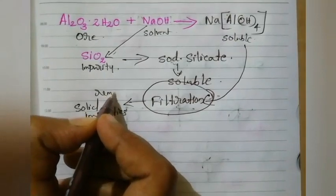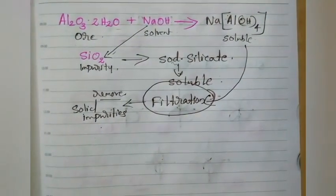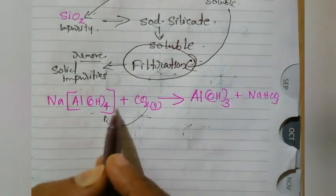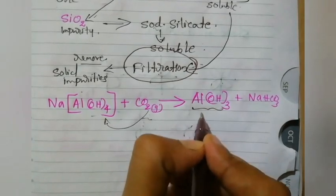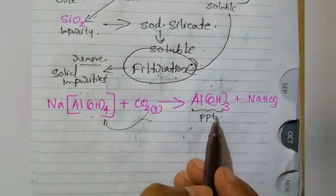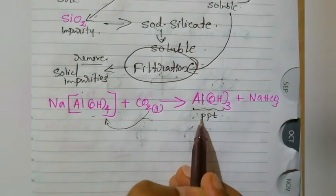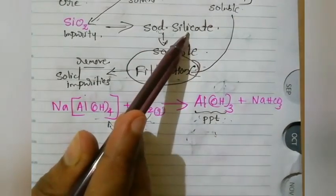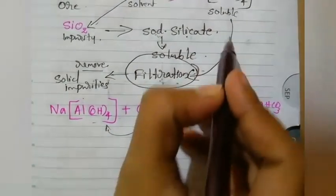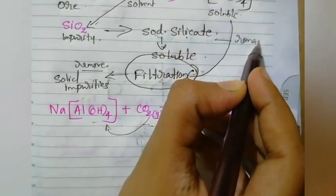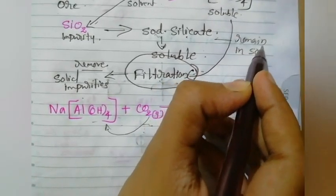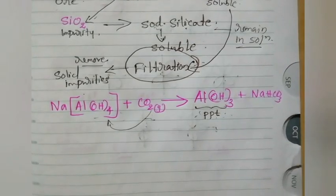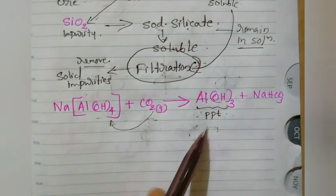After filtration, the clear solution is obtained. We then pass carbon dioxide into that solution. The sodium aluminum complex will then be precipitated as aluminum hydroxide — Al(OH)3. Sodium silicate will remain in the solution itself, because passing carbon dioxide will not precipitate sodium silicate. Aluminum hydroxide gets precipitated out, and the second step is to pass carbon dioxide to the filtrate.